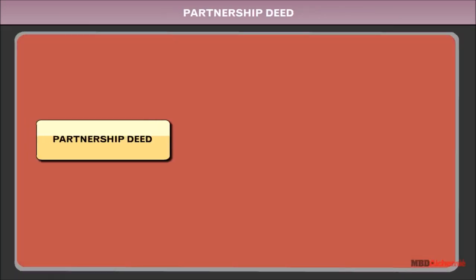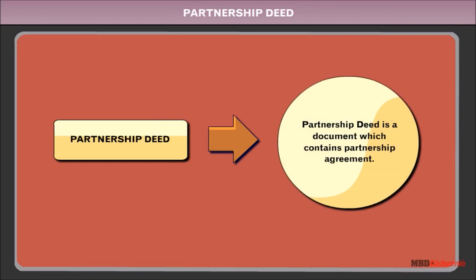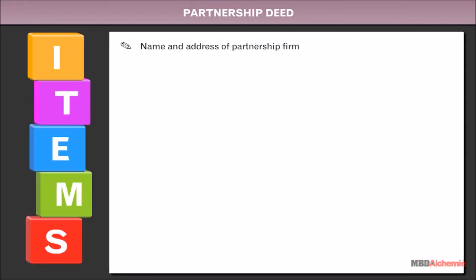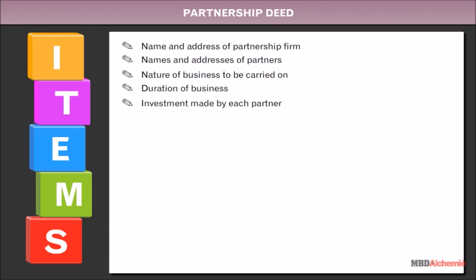Partnership deed is a document which contains the partnership agreement. It contains the name and address of the partnership firm, names and addresses of partners, nature of business to be carried on, duration of business, investment made by each partner, and rate of interest.